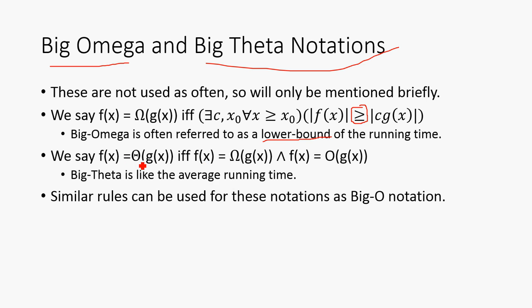And then, we also have Big-Theta notation. And, we say that f(x) is Big-Theta of g(x) if and only if it's both Big-Omega and Big-O. So, it has to be Omega and O. So, it's sort of like the average running time. And, similar rules for both of these can be used as Big-O notation. For example, the polynomial relationship that we saw earlier of degree n can still hold for both of these.